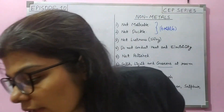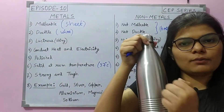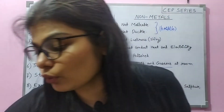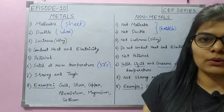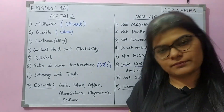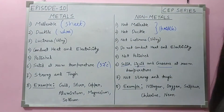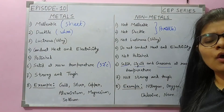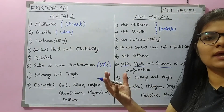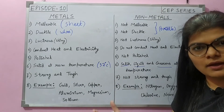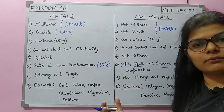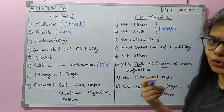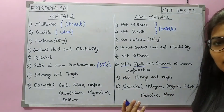Metals are strong and tough. Like this bottle — it is very strong and tough. Non-metals are not strong and tough; they are soft. Most of them are gaseous. Gas molecules are very far away from each other, so they do not even hold together. Oxygen gas, for example, is very low in density.